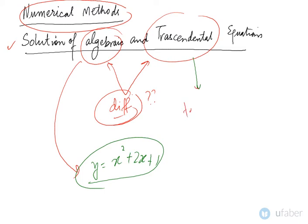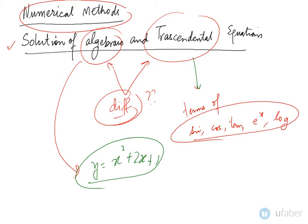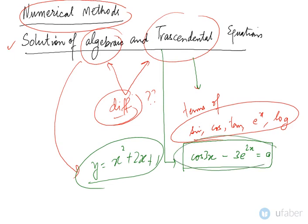But in a transcendental equation you would have terms of sine, cosine, tangent, exponential terms, and log terms. These are the kinds of terms you would have in a transcendental equation. For example, a transcendental equation can be cos(3x) minus 3e to the power 2x equals 0.